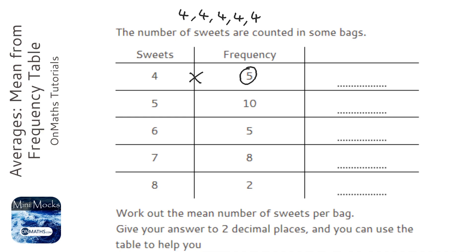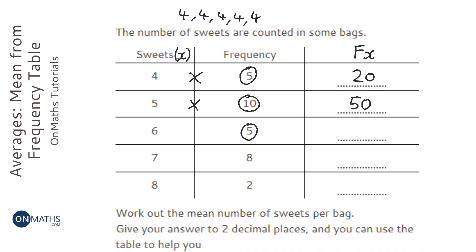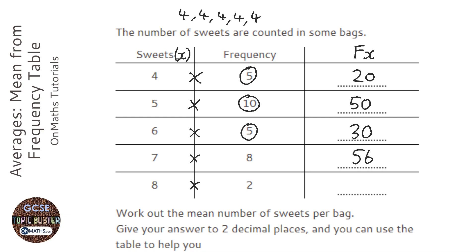When we type that into the calculator we get twenty. We create this kind of fx column — I always call this column the fx column. This ten here means there are ten fives, so if we add them all up we get fifty. This five here means there are five sixes, so those five sixes give us thirty. And similarly we multiply seven by eight, and eight by two.